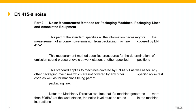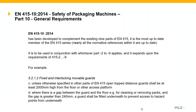EN 415-10 is a complementary standard that fills in any gaps missing from the other parts. For example: fixed and interlocking movable guards, unless otherwise specified in other parts of EN 415; open-top distance guards should be at least two metres high from the floor or other access platform. We saw that 1.6 metres can be used in EN 415-7 depending on the type of machine. Where there's a gap between the guard and the floor greater than 240mm — say for cleaning or removing packs — an additional guard should be fitted underneath to prevent access to hazard points, or alternatively a horizontal guard can be added.